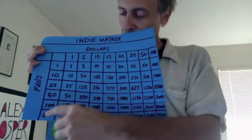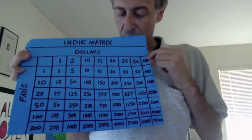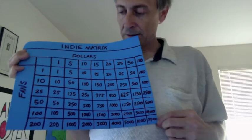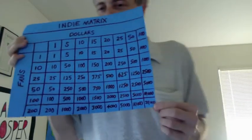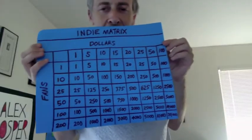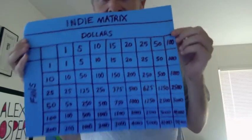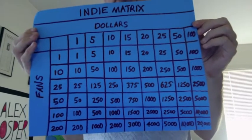And let's say 200 fans buy a $100 license. Just one. Well that's $20,000. So you can see that there's lots of creative ways to make money with the Indie Matrix. It's just a matter of applying your imagination to this chart.